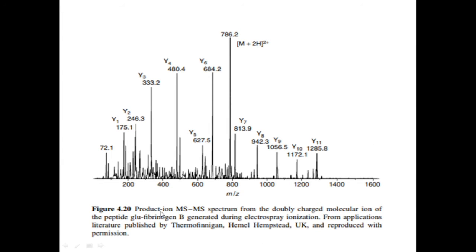In figure 4.20, the product ion MS-MS spectrum from the doubly charged molecular ion of the peptide glue fibrinogen B generated during electrospray ionization. This is literature published by Thermo Finnigan, Hemel Hempstead, UK and reproduced with permission. The implications of charge must also be considered when constant neutral loss spectra are obtained, because no longer is the loss necessarily of a neutral species.